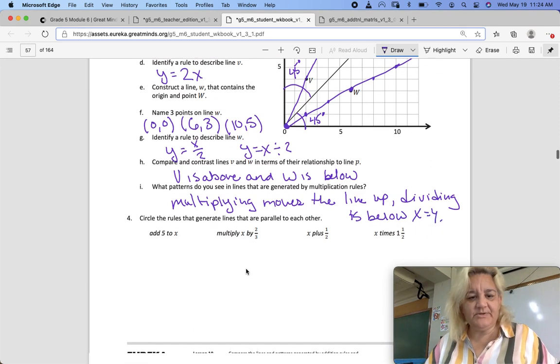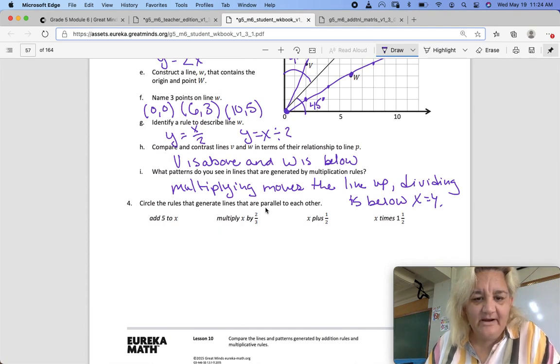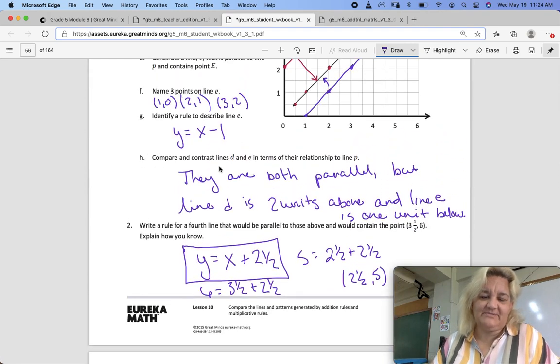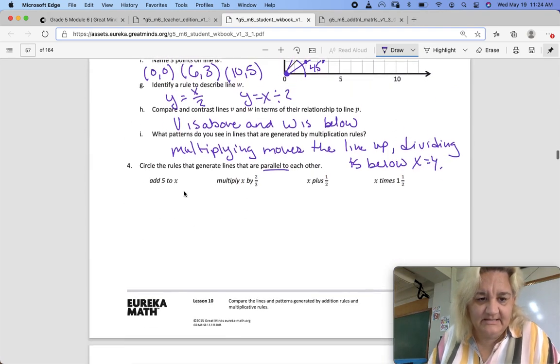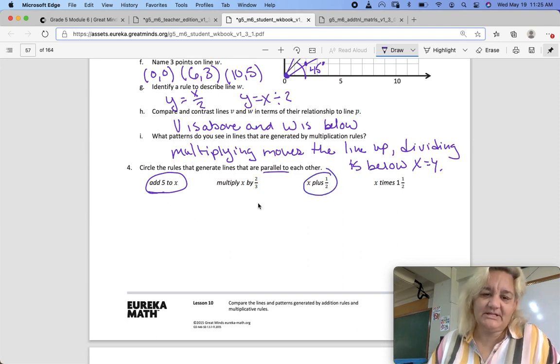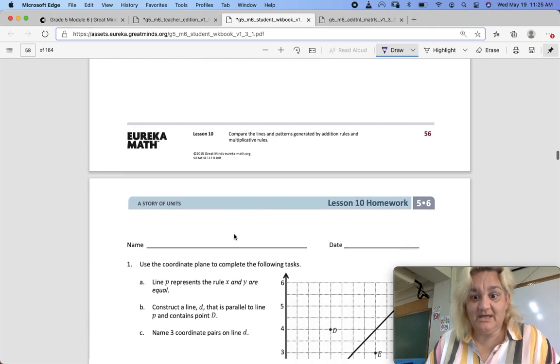Circle the rules that generate lines that are parallel to each other. Remember we said parallel lines are the adding and subtracting of X. Add 5 to X. That is a parallel line. Multiply X by 2 thirds. That's not going to be parallel. X plus 1 half. Yes, that's addition. X times 1 and 1 half. Nope. That's not going to be parallel. Only addition and subtraction give you parallel lines.